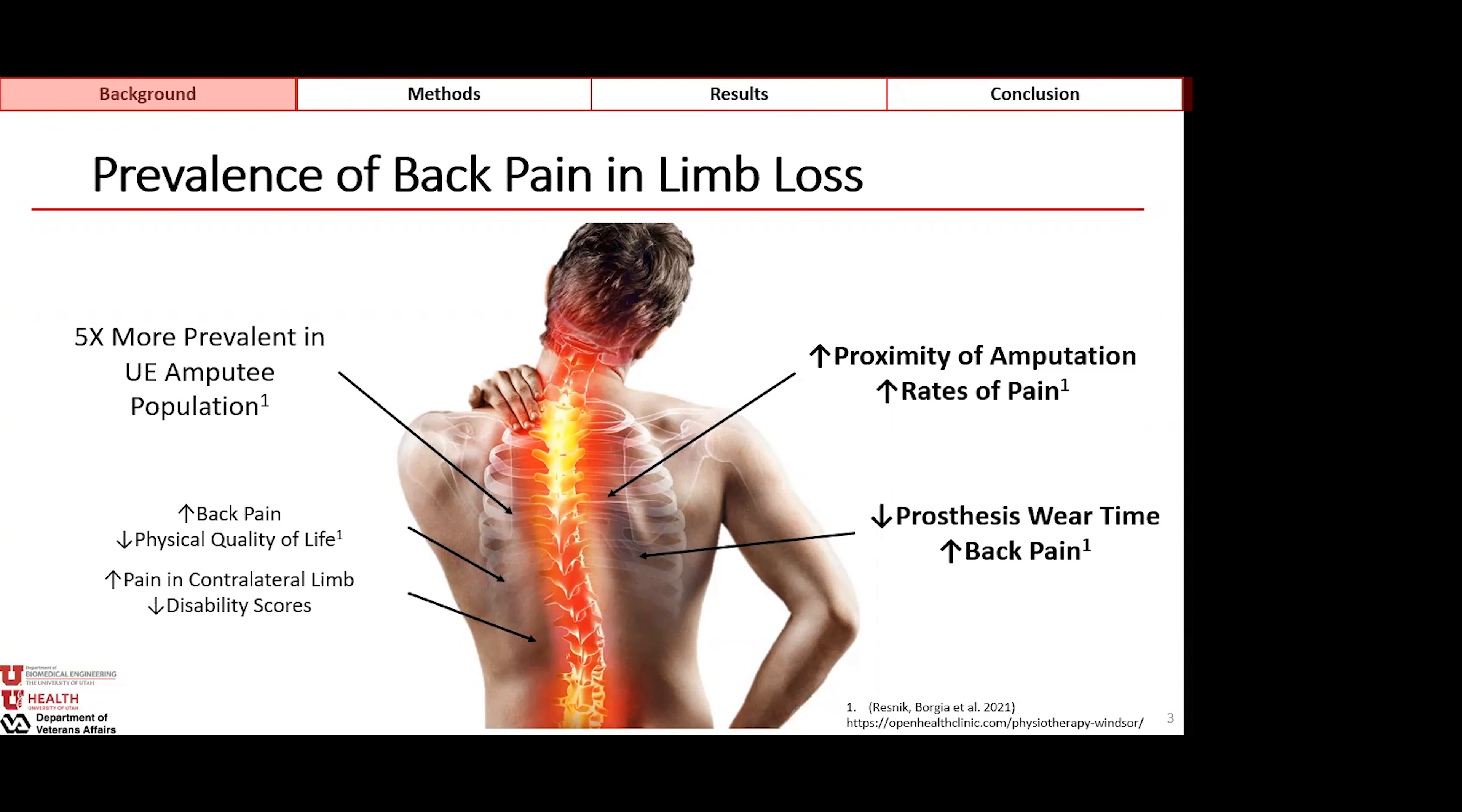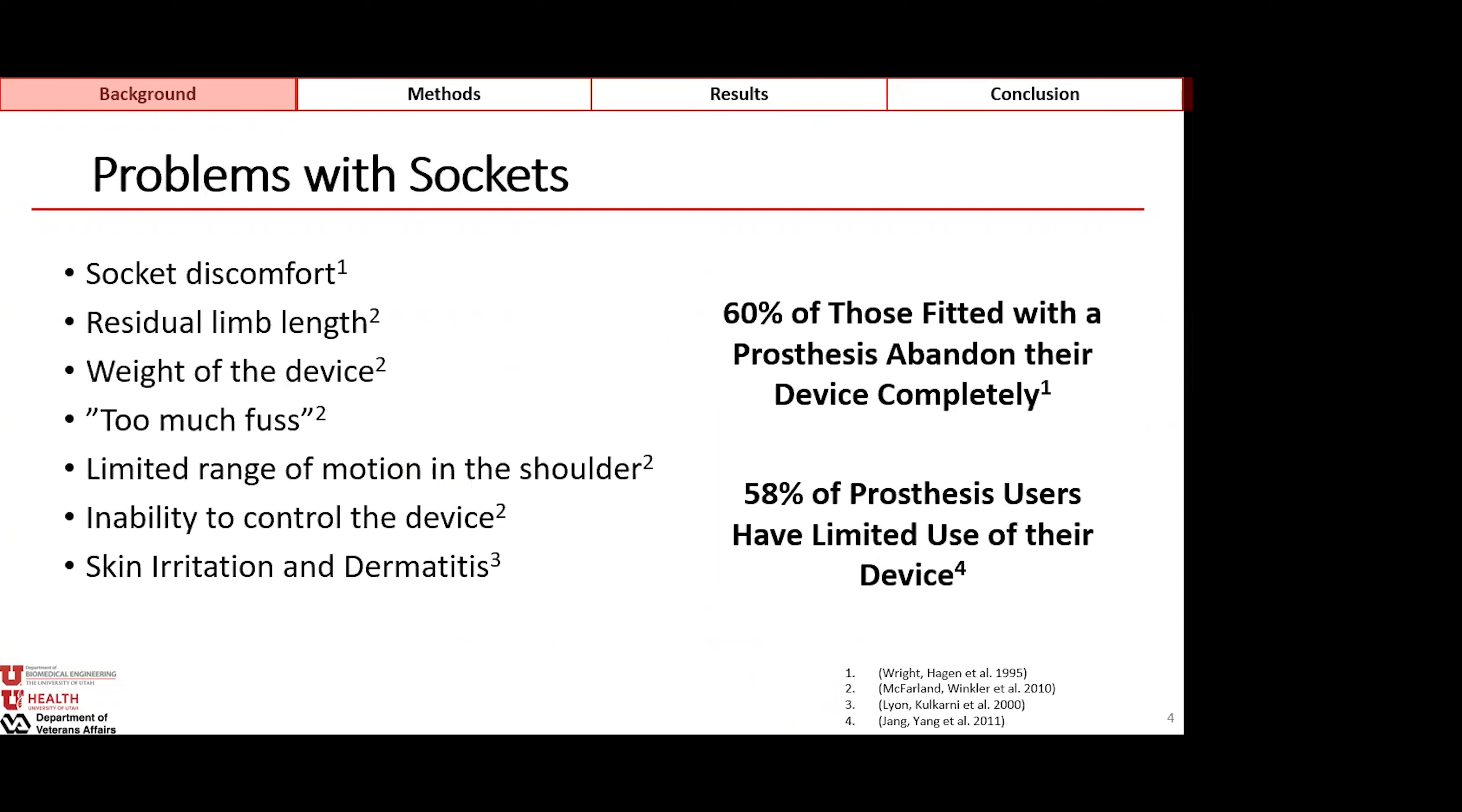This is an extreme problem for the transhumeral amputee population because they have the least success of maintaining use of their prosthetic device. They have the highest rate of abandonment across all major upper extremity amputees, which is 60%, and of those who continue to use their prosthetic device, nearly 60% report having limited use, which we classify as less than eight hours on any given day.